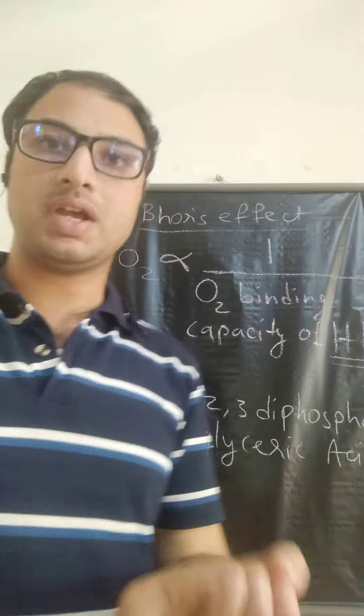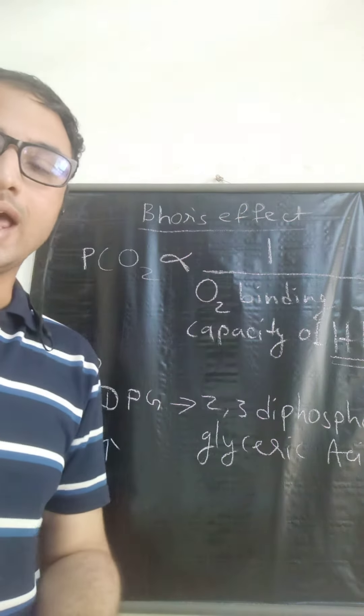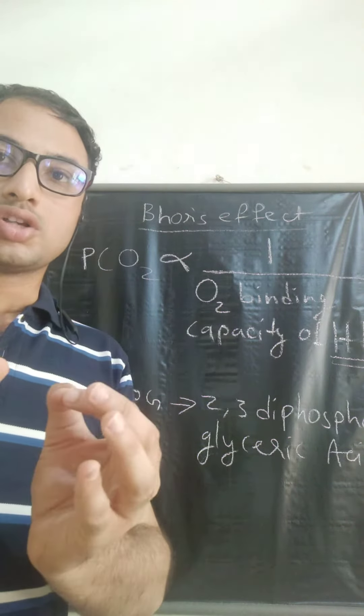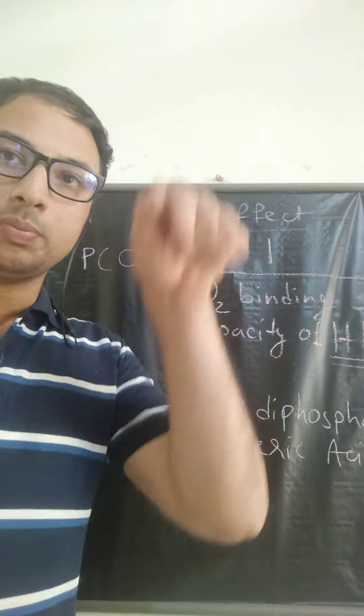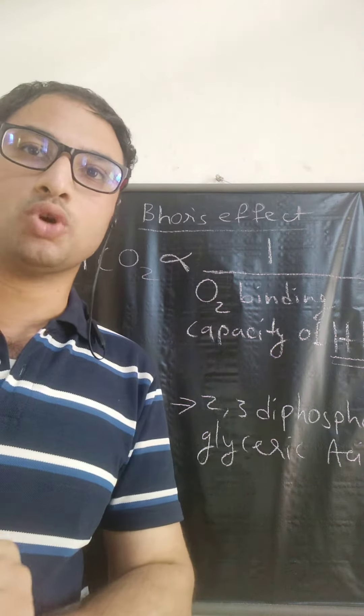See, when the partial pressure of carbon dioxide increases, then oxygen binding capacity of hemoglobin will decrease. This is called as Bohr's effect.